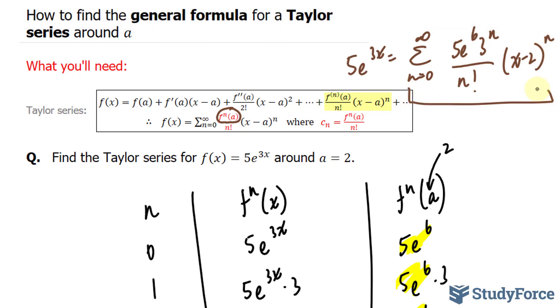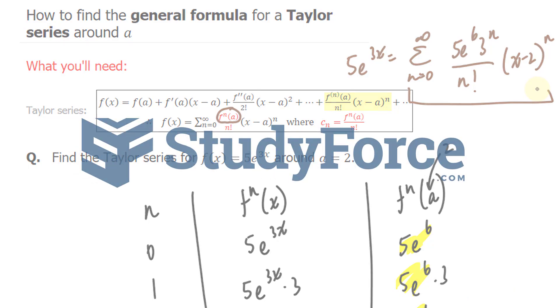This right here represents the general formula for the Taylor series of this function. And there you have it. That is how to find the general formula for a Taylor series around a value a.